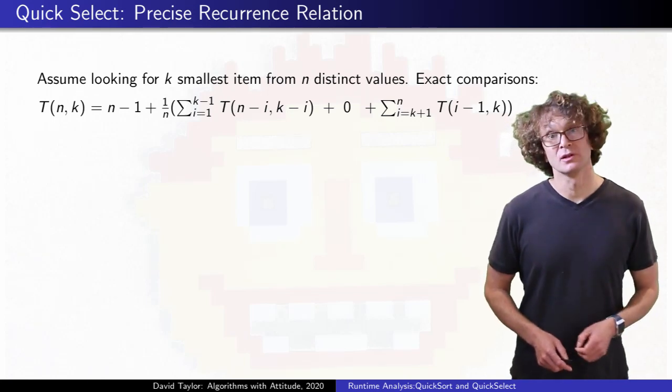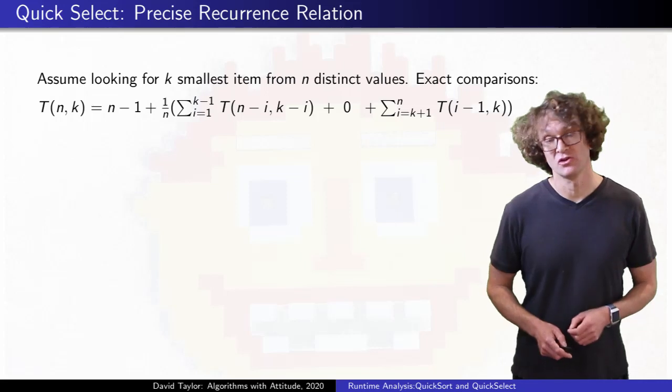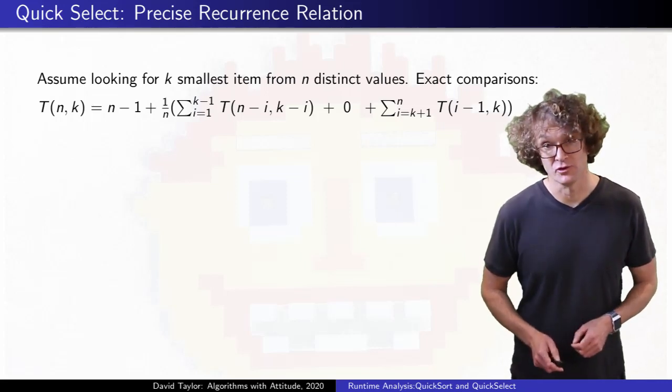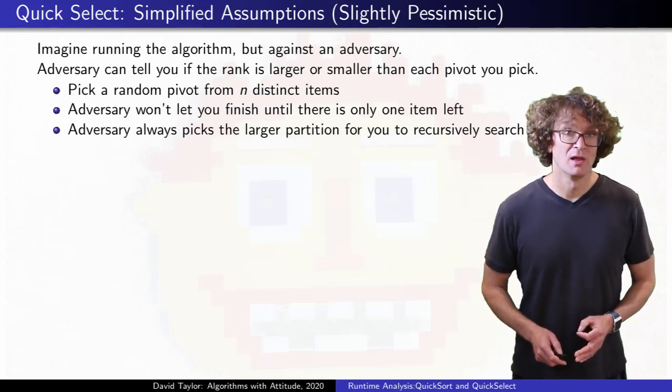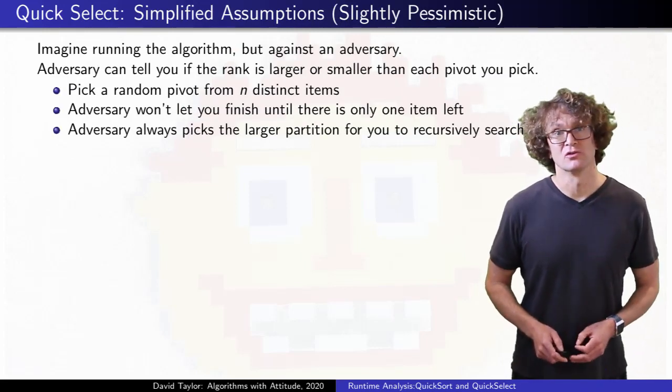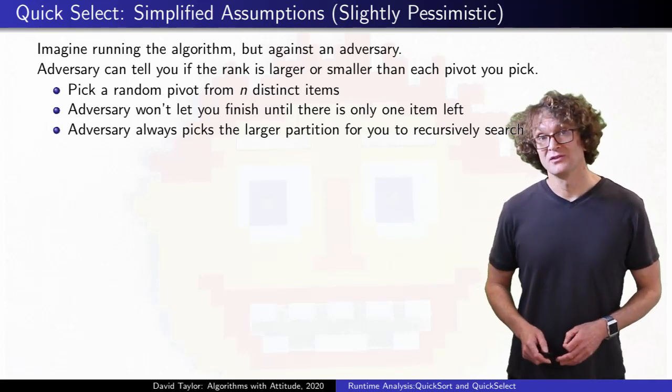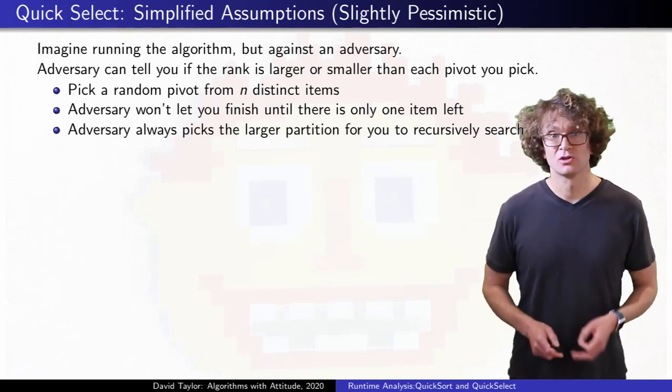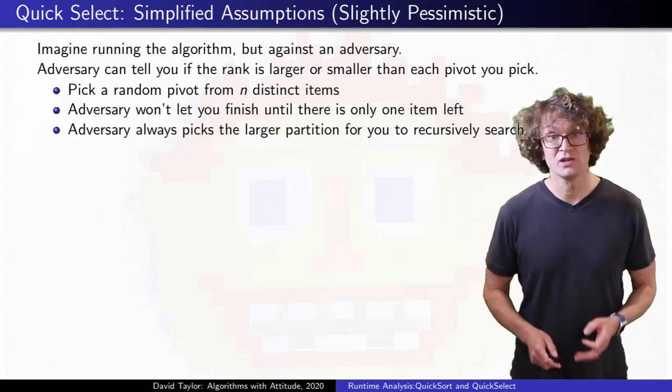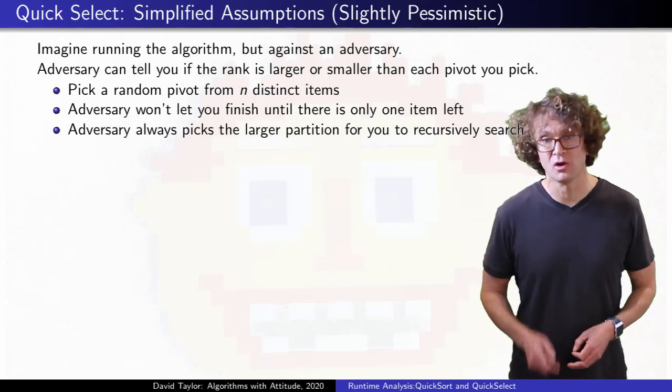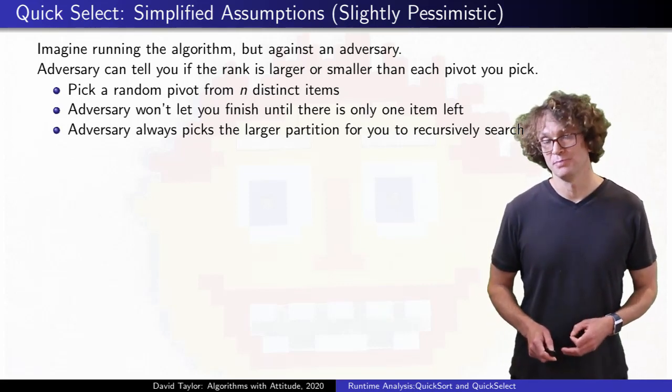You know what? Maybe that's a little too precise. It looks complex enough that I really don't want to solve it. I'll leave it as an exercise for the viewer. Instead, we'll make some pessimistic assumptions that aren't quite as clumsy as the ones we started with. Imagine you are running the algorithm against an adversary that gets to change the rank you are seeking after each time you partition, as long as it doesn't change it to something you have already discarded, but it can force you to always have to search the bigger partition.